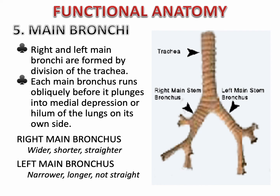Next are the main bronchi. We have the right and left main bronchi, formed by the division of the trachea. Each main bronchus runs obliquely before entering the medial depression of the lungs. The right main bronchus is wider and shorter, while the left is narrower, longer, and not straight. Due to these anatomical differences, the right main bronchus is the more common site for an inhaled foreign object to become lodged or aspirated.